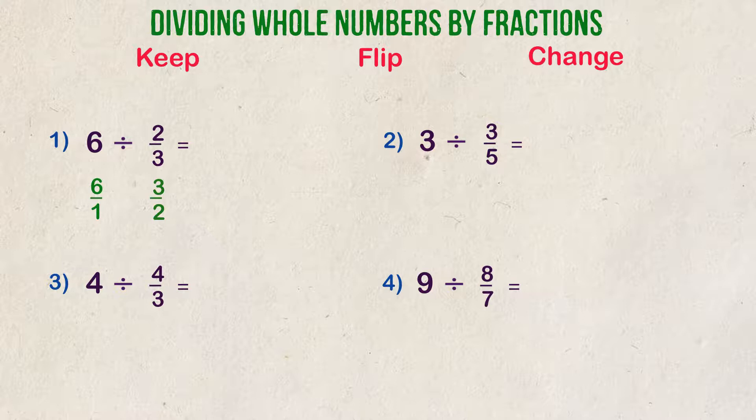Finally, C is for change. We'll change the sign from division to multiplication. The problem is now written as 6 over 1 times 3 over 2.